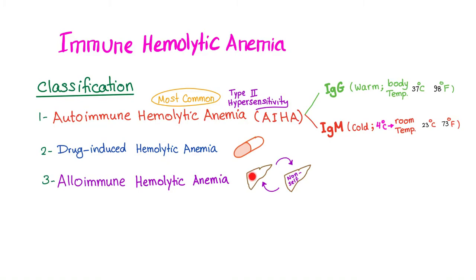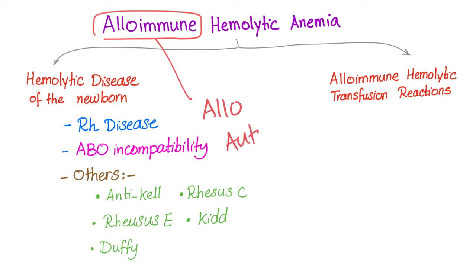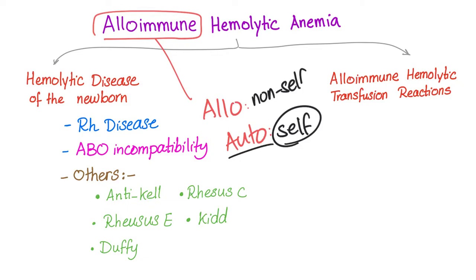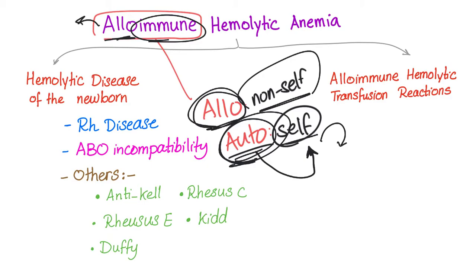Alloimmune hemolytic anemia is basically a fight between the self and the non-self. What does alloimmune mean? Immune is easy — immune-related immunity. But what about allo? There's a difference between allo and auto. Auto just means self — you. Allo means non-self — it's not you. In transfusion, autologous means transfusing from your own body to yourself, while allogeneic means getting a part from another person. So alloimmune means you have an immune problem due to a non-self, something from outside of you.